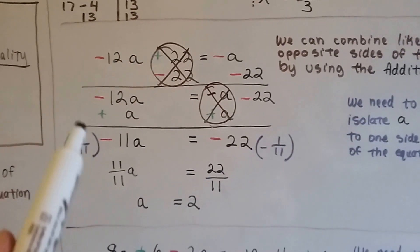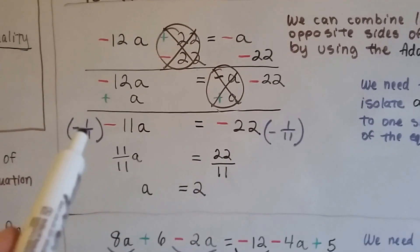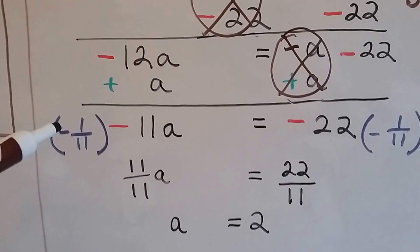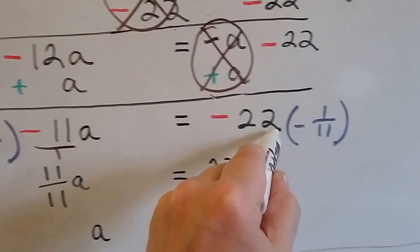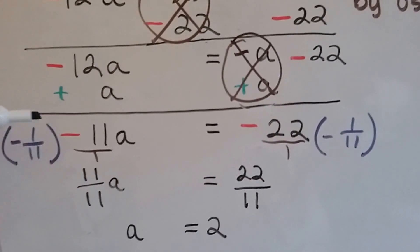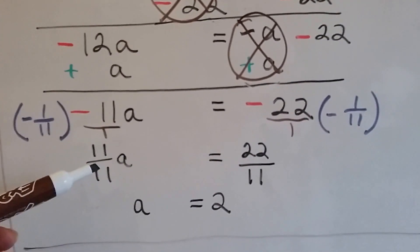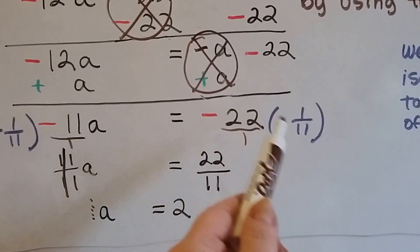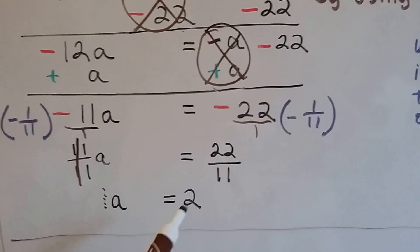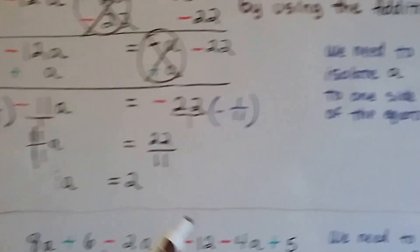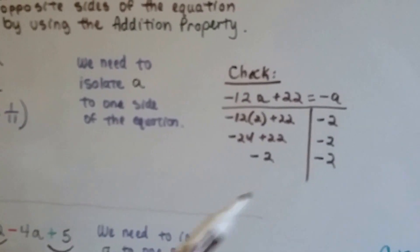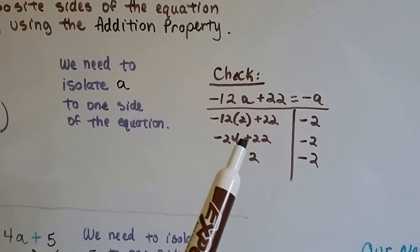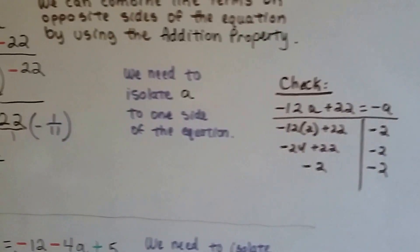Now we've got negative 11a on one side and minus 22 on the other, so we use the multiplication property of equality and multiply both sides by the reciprocal of negative 11, which is negative one-eleventh. A negative times a negative makes a positive, so we get positive 11 over 11, which is the invisible 1, giving us 1a. On the other side, a negative times a negative gives positive 22 over 11, which equals 2. So a equals 2, and checking by substituting gives negative 2 equals negative 2.